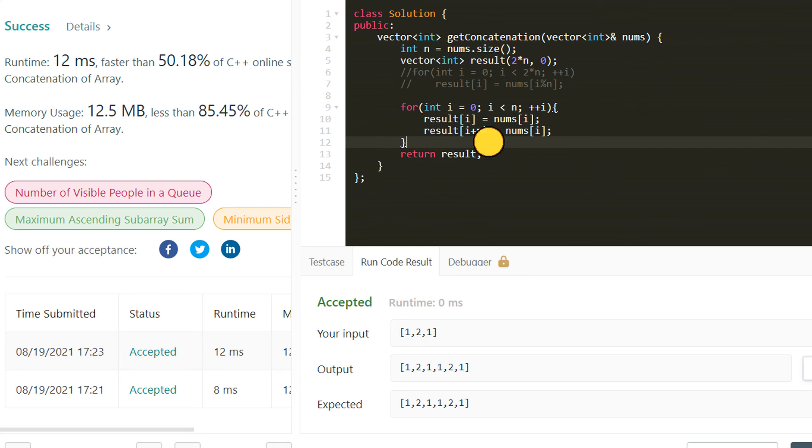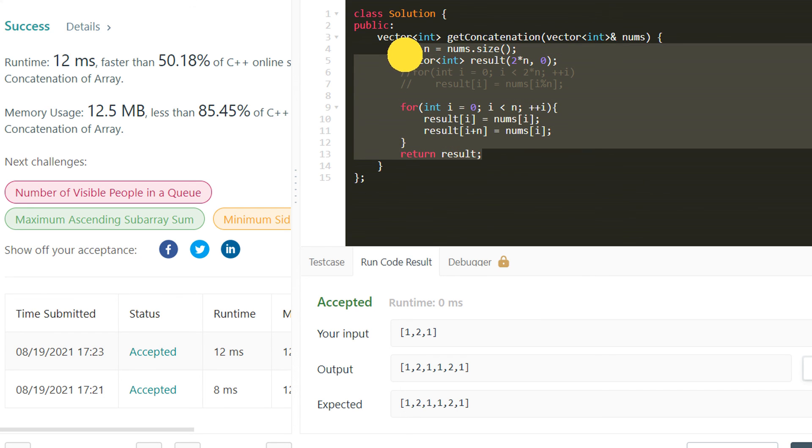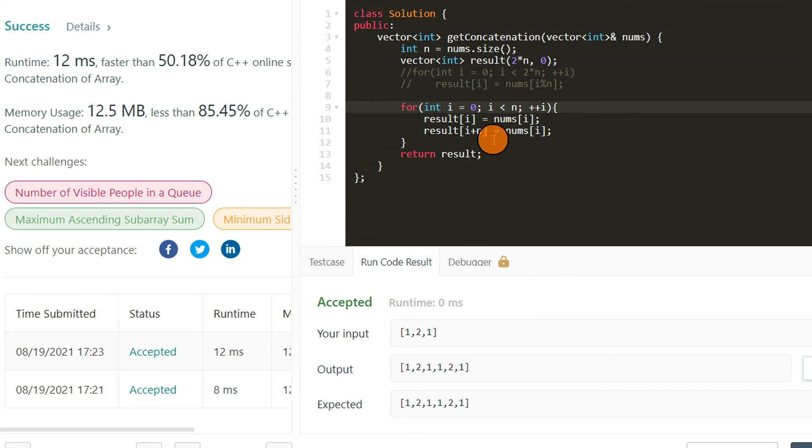Somehow this earlier solution was taking 8 milliseconds, this one is taking 12 milliseconds, but this may be random also. The time complexity of both are the same. I hope you understood this simple problem. We will gradually increase the difficulty level of further problems related to arrays. See you in the next lesson.